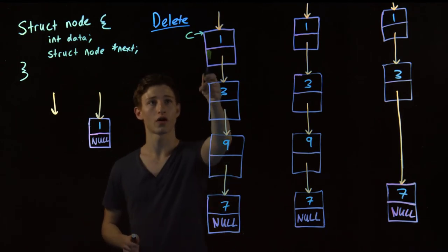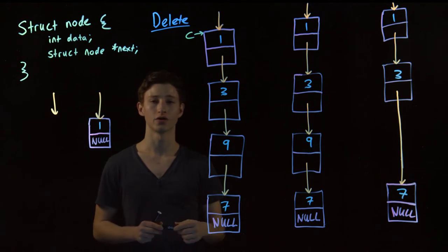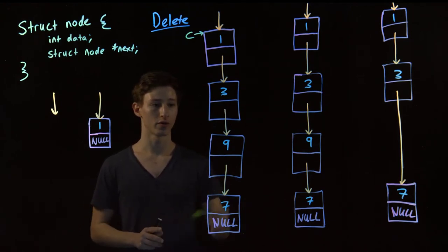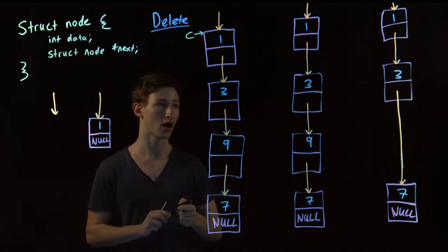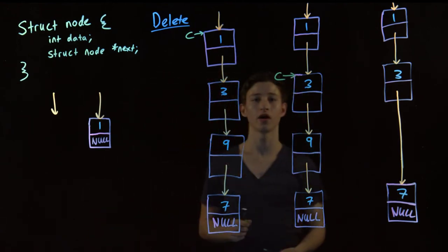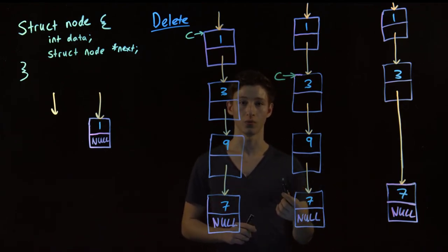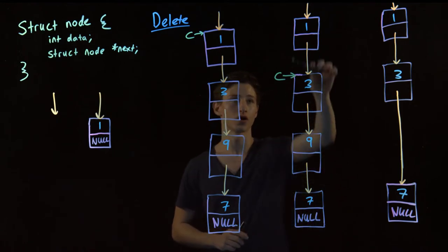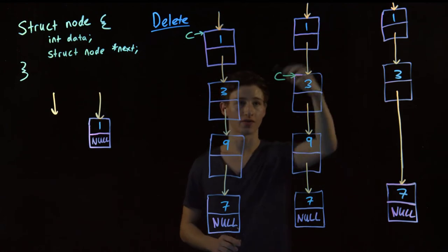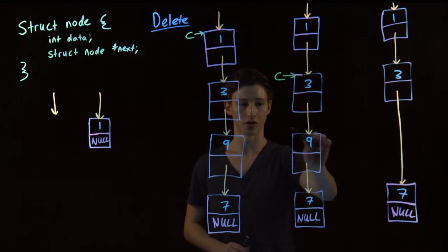So we'll have current point to our first node over here, and we'll get it to iterate through until we get to the node before the node we wish to delete. So if we want to delete this node, we'll wait until current gets here. Now, because it's only one node down, we will use a loop, but we only have to execute that loop one time. If there were lots of nodes here or we were deleting a node with a large index, we'd have to iterate through quite a few times before we got to the node before the node we wish to delete.